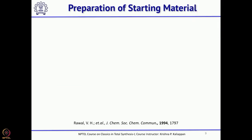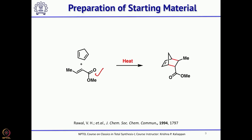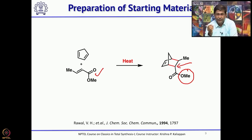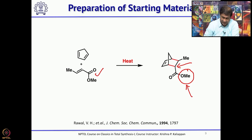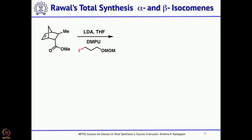Now let us see how Rawal achieved the synthesis of isocomines. He started from cyclopentadiene and did a Diels-Alder reaction with the dienophile methyl crotonate to get a bicyclic compound. The next step should be to remove the methoxy and install a methyl, but before that you need to perform alkylation at that carbon, because you need a three-carbon unit attached there for the intramolecular radical cyclization. So you take the ester, treat with LDA and quench with an iodide — this iodide is prepared in three steps from propane-1,3-diol.